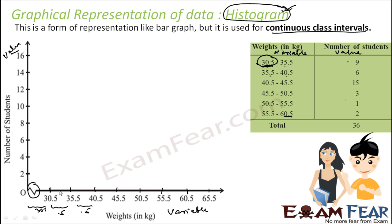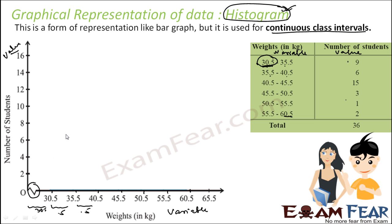Now we need to represent the number of students on the vertical axis on a suitable scale. We will draw a rectangle where the width of the rectangle equals the class size, and the length or height equals the frequency of the corresponding class. I have redrawn these points and let us start with the first bar. Here, the width matters, and obviously the height also matters.